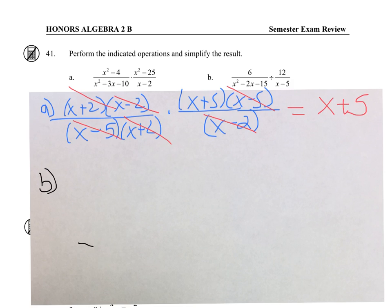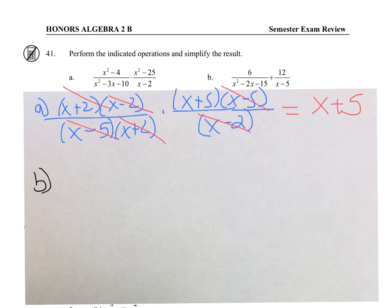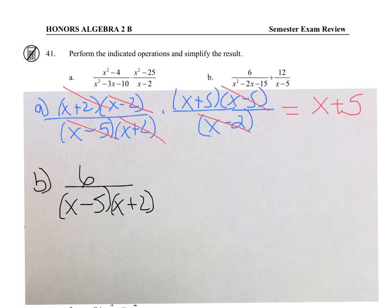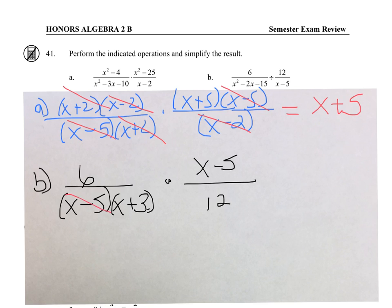Now for B, when dividing, we have to multiply by the reciprocal of the term after the division symbol. So first I'm going to factor. Then we take the reciprocal of the second term because it's dividing. We can do X minus 5 over X minus 5, and 6 and 12 reduce. So we're left with 1 divided by 2 times X plus 3.